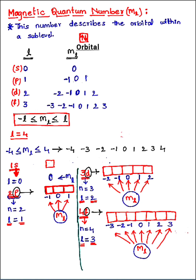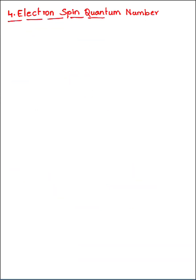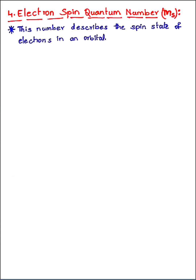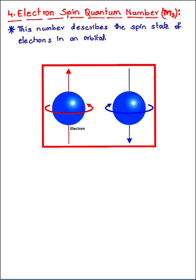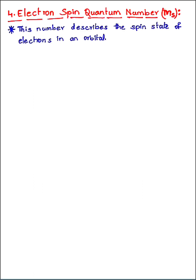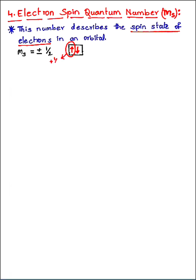The last quantum number is the electron spin quantum number, with symbol m_s. This describes the spin state of an electron in an orbital. The electron spin can be one of two values: +1/2 or −1/2. If the electron arrow points upward, the spin is +1/2; if the arrow points downward, the spin is −1/2.